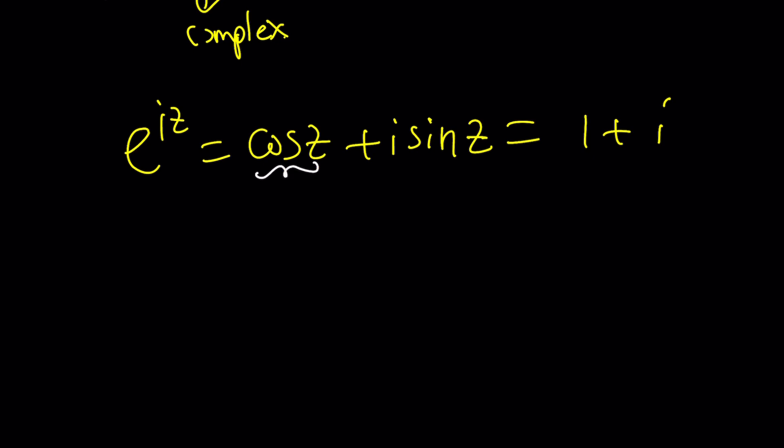But from here, if you say that real parts equal real parts, and imaginary parts equal imaginary parts, you're going to run into a contradiction because cosine z and sine z cannot be one at the same time, because sine squared plus cosine squared is one, even when z is complex. That's the key word, complex.